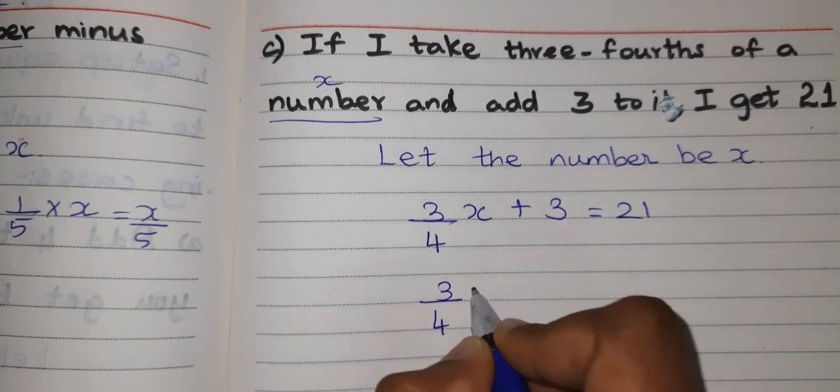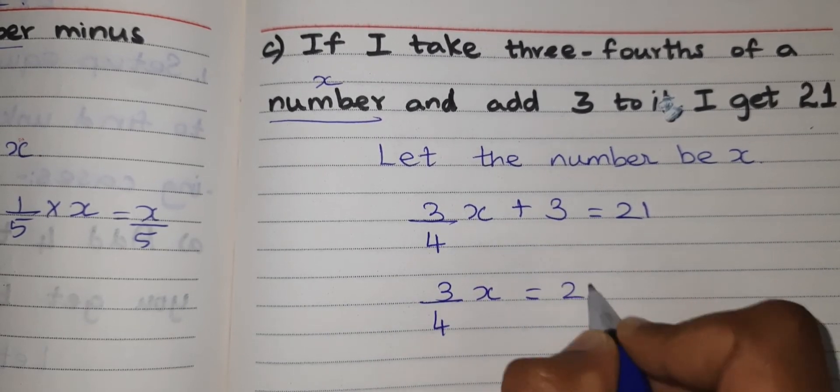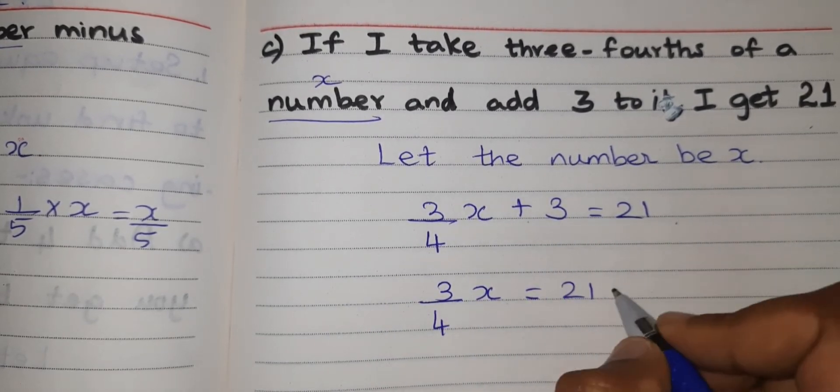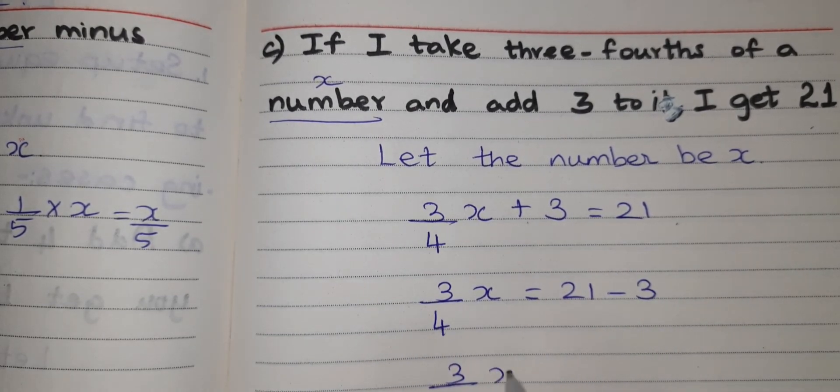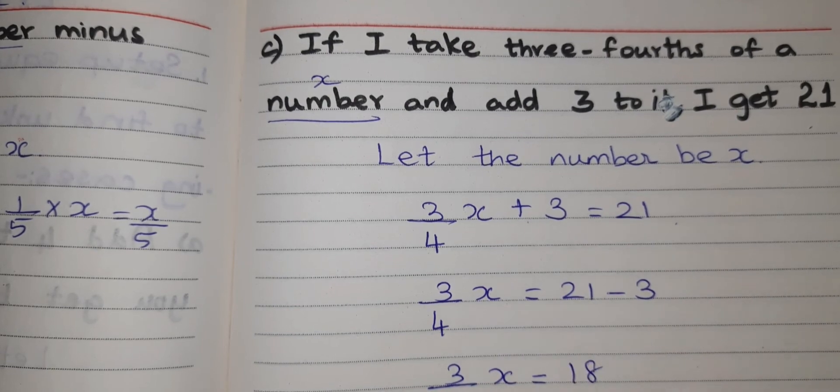So keep 3 by 4X equal to 21. Plus 3 when goes to this side it will become minus 3. So 3 by 4X, 21 minus 3 you will get 18.